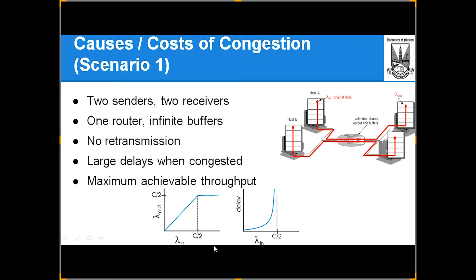The causes and costs of congestion: two senders, two receivers, one router, infinite buffers, no retransmission — large delays when congested. The maximum achievable throughput is shown here. Because of congestion we will have a drop in our networking. These are certain scenarios based on which there are principles and implementation processes that have been worked on.